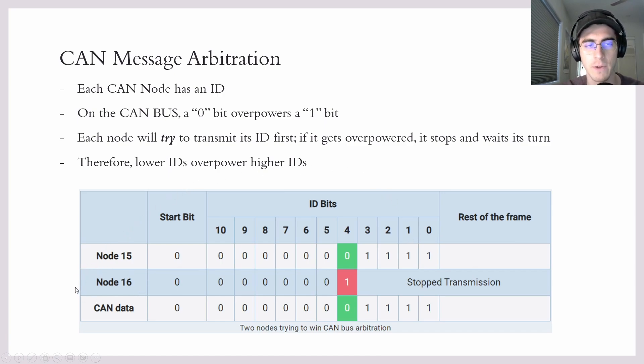So as you can see in the case of node 16 here, it fails. So it stops its own transmission and it will wait until node 15 is done, and then it will try again. And that is pretty much the gist of it. That is how you have a bunch of nodes on a shared bus making sure they don't step over each other.